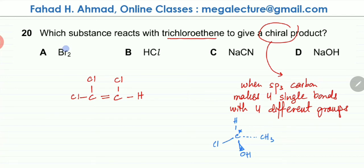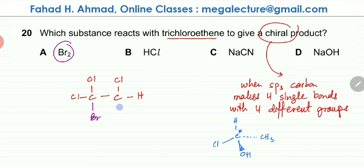Starting with bromine — this is bromination. The double bond reacts with bromine in an electrophilic addition reaction. The double bond breaks, changes into a single bond, and the bromines get added to the molecule. This is the product. Now I need to figure out whether any of these two carbon atoms is chiral or not.